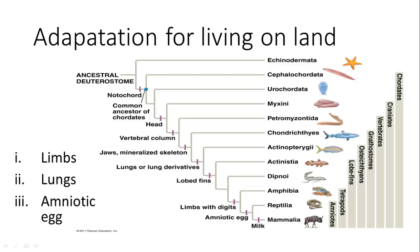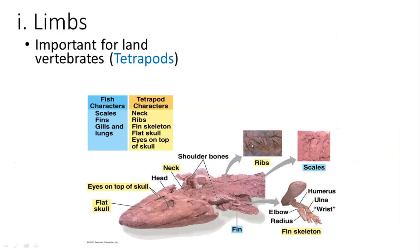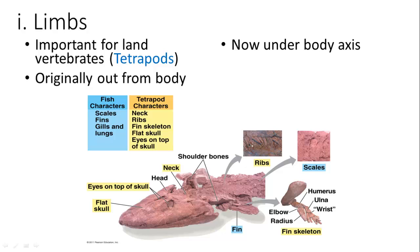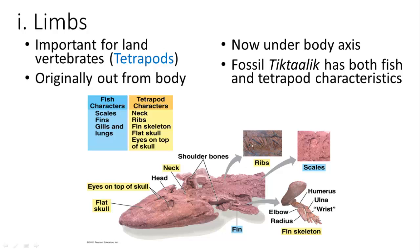The next adaptations for living on land are limbs, lungs, and the amniotic egg. Limbs are very important on land to resist gravity since there is no buoyancy from water. Originally limbs extended out from the sides of the body rather than underneath it. The fossil Tiktaalik has both fish and tetrapod characteristics — it had limbs that allowed it to stand on land, a neck with ribs, a flat skull, and eyes on top of its head. Its fish characters included scales, fins, and gills with lungs. This is a good example of an intermediate species, or a missing link.